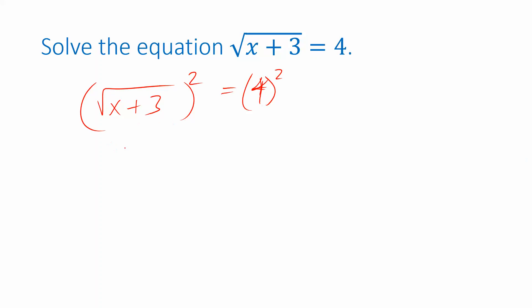On the left, we get x plus 3, because the square root and the squaring cancel. On the right, we have 16. And then this time there's one more step to isolate x. We just subtract 3 from both sides. So x is 13.